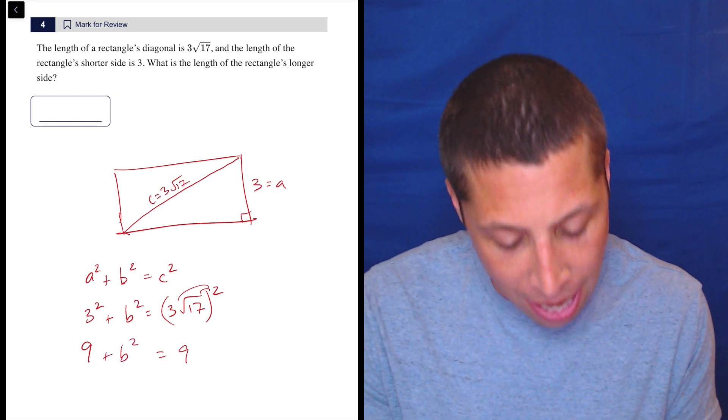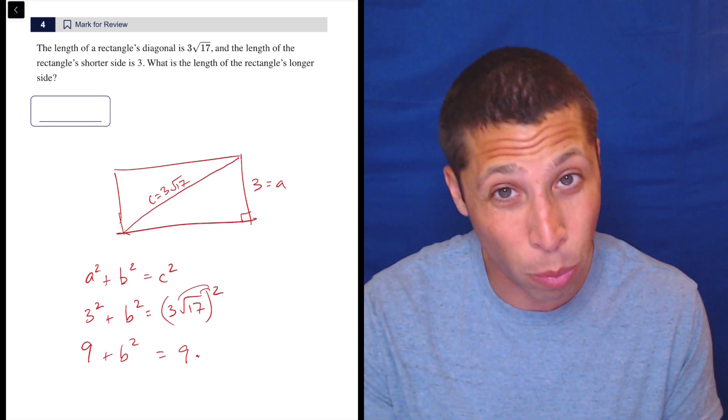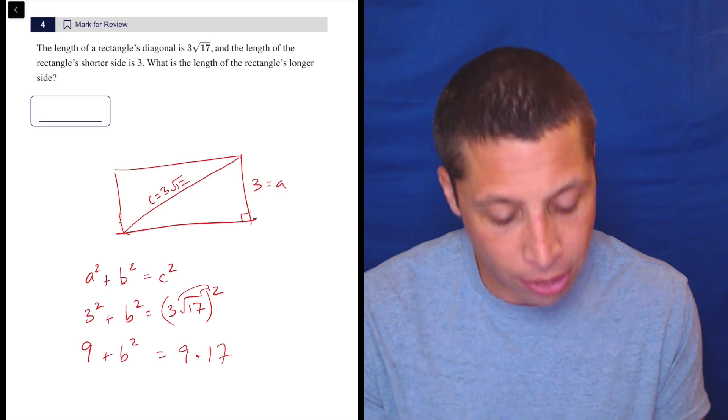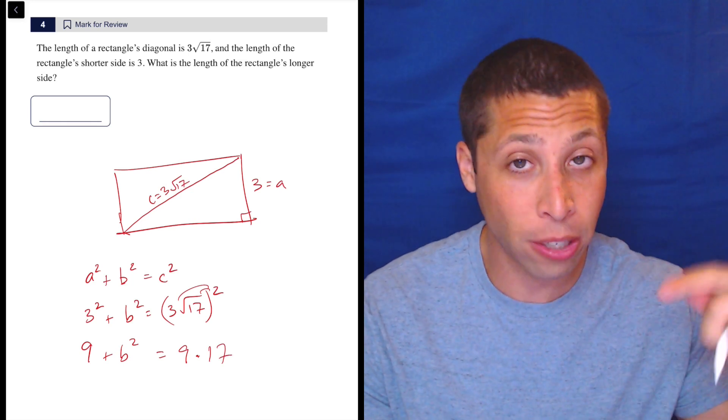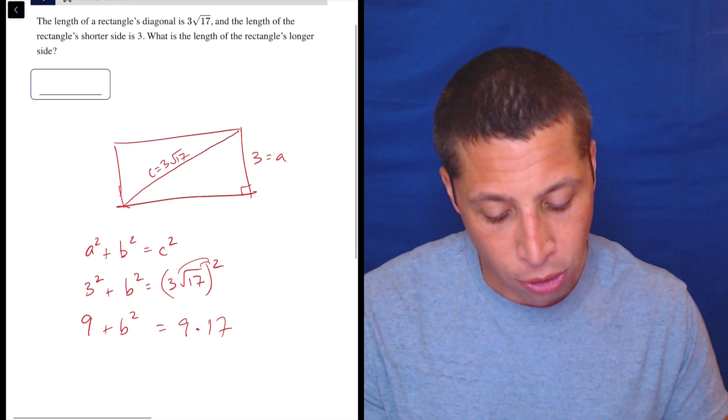And then plus b², and then it's going to be 9 (which is 3²) times 17. But that 17 is in a square root, so when we multiply, it just becomes a regular old 17. So √17 × √17 = regular old 17.